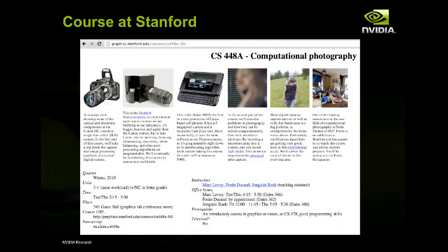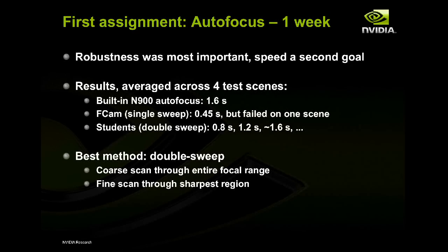FCam has also been used in several courses, the first at Stanford. The first assignment was autofocus. The interesting thing was that the students had one week — normally way too cruel a task. But if you have good tools, you can get good results. Every team was able to get a working autofocus algorithm running on a camera phone in one week. Some were actually better than the built-in autofocus, converging to a good solution faster. It only shows that if you have good tools, you can get good things done faster.